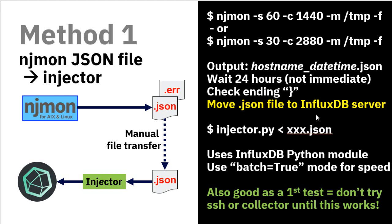Secure FTP and similar tools will work quite happily. The injector is a Python program — Python can read JSON files very, very fast, like 60 megabytes a second. Whatever the filename was, we redirect the file into the injector. It's going to use the InfluxDB Python module, so we'll have to install that. In the injector file, set batch equals true — this is good for speed. The injector will read the entire file in one gulp and then go through all the records putting the data in.